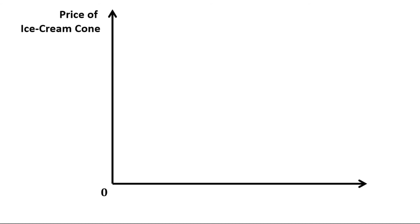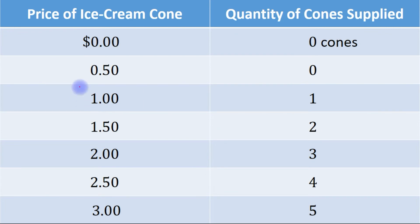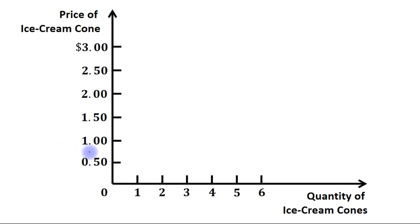Here we have two axes. This is the origin. On the vertical axis we have taken price of ice cream cone, and on the horizontal axis there is quantity of ice cream cones. When the price is $0, quantity of cones supplied is 0. When price is $0.50, quantity is 0. When the price is $1, quantity of cones supplied is 1. So when the price of ice cream cone is $1, quantity of cones supplied is 1 — that means this point right here.